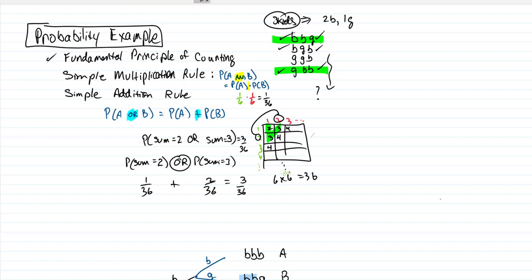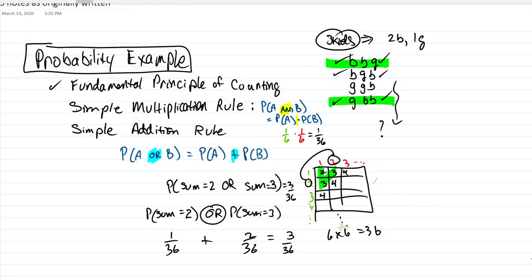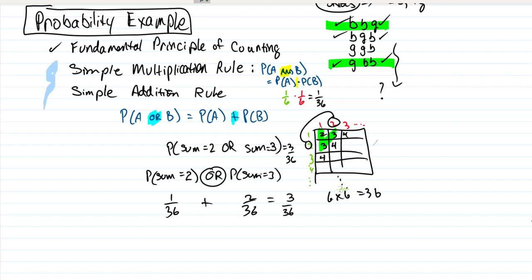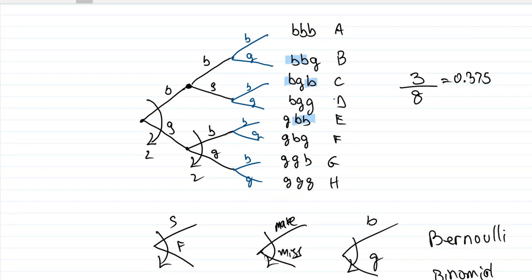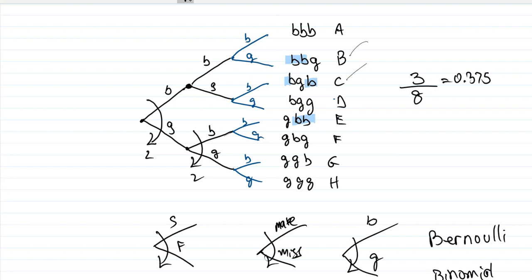Let's pick up where we left off. We're using the fundamental principle of counting to answer this question: given that we have three kids, what's the probability of having exactly two boys and one girl? We reviewed a couple of the basic rules of probability, and then using the fundamental principle of counting we were able to get a count of all of the possible permutations.